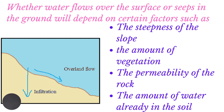Whether water flows over the surface as overland flow or seeps into the ground as infiltration will depend on a number of factors. These include the steepness of the slope, the amount of vegetation, the permeability of the rock, and the amount of water already in the soil. Steeper slopes will encourage overland flow while gentler slopes will encourage infiltration.